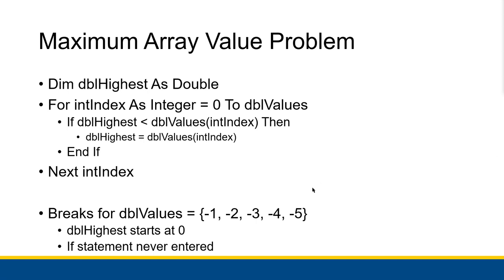That is the idea behind our maximum array value problem, except that it sometimes breaks. For example, suppose double values is the array containing negative one, negative two, negative three, negative four, and negative five. Note that double highest — I don't initialize it, so it starts at its default value of 0.0, which means double highest is higher than every single one of those values. We can't cheat by setting it to negative infinity — that is busted. Double highest starts at zero, which means it's higher than every single value in double values, so we never enter the if statement. That's a pretty massive problem.